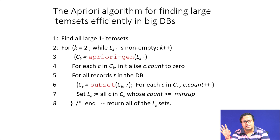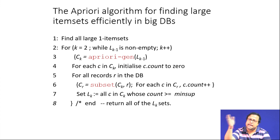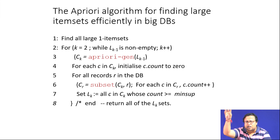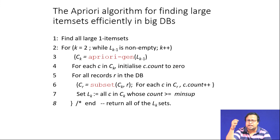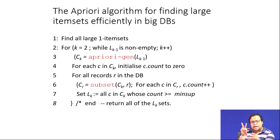If 2 items together are not occurring 10 percent of the time, then 3 items will not occur 10 percent of the time either. For example, if A and B together are not occurring 10 percent of the time, then A, B, H also cannot occur 10 percent of the time. So A and B not being part of the large item set means A, B, H cannot be part of the large item set. You only find item sets for those products whose individual items were already in the large category.